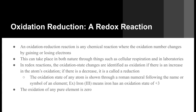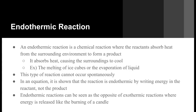In redox reactions, the oxidation state changes are identified as oxidation if there is an increase in an atom's oxidation state, but if there is a decrease in the atom's oxidation state it is called a reduction. The oxidation state of an atom is shown through the Roman numeral following the name or symbol of an element. For example, iron(III) means iron has an oxidation state of plus three. The oxidation state of any pure element starts at zero.